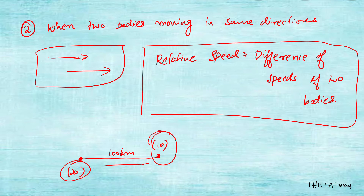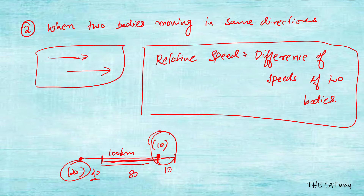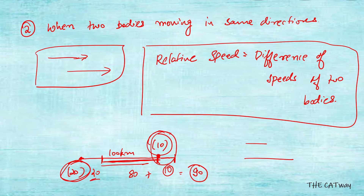In the next one hour, the body moving at 10 km/h will go 10 kilometers further, whereas the body moving at 20 km/h will go 20 kilometers further. So the remaining distance becomes 80 plus 10, which is 90 kilometers. This happens because the second body is covering 20 kilometers while the first covers only 10 — meaning the second body covers 10 kilometers more than the first in one hour.